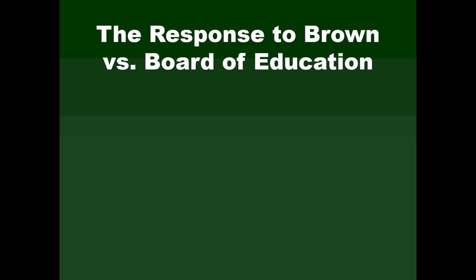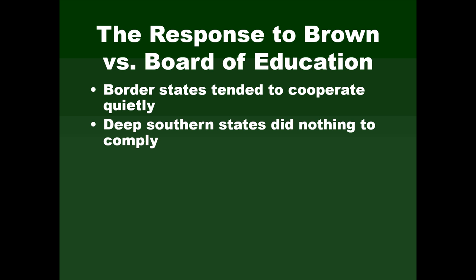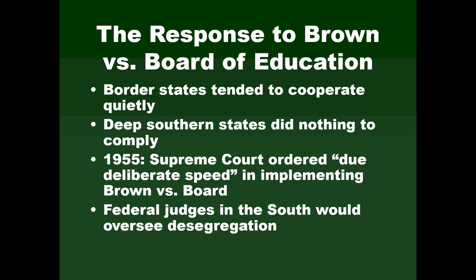After the Brown decision was reached in May of 1954, the response was absolute opposition in the deep South. The border states tended to cooperate quietly, but the deep Southern states did absolutely nothing to comply. The school year of 1954–55 came and went with nothing done, so a year later in 1955, the Supreme Court ordered 'deliberate speed' in implementing Brown versus Board, and gave federal judges in the South the power to oversee desegregation — though they did not have a large military force behind them, as that would require the president.